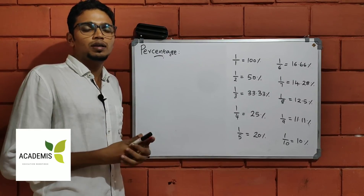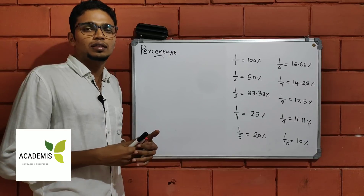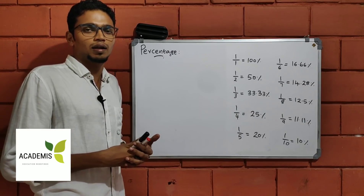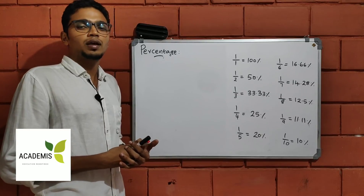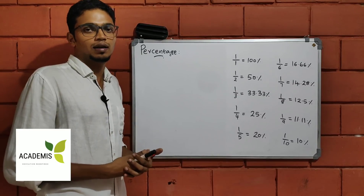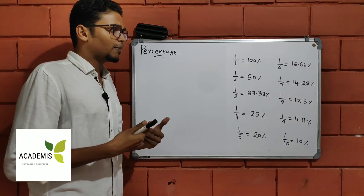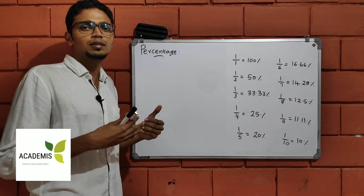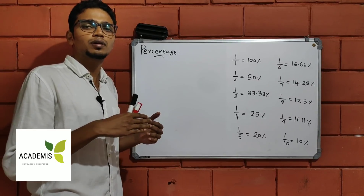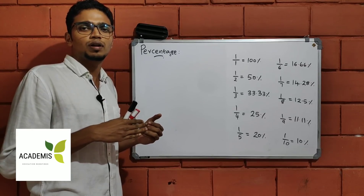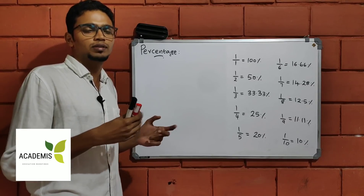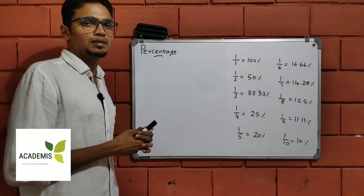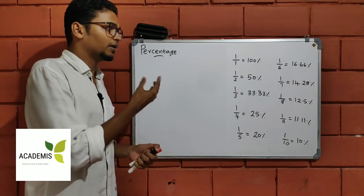We've already done a few videos. If you want to try that, we'll start the first topic in aptitude. The first thing is percentage. Percentage is one of the key characters. We have simple interest, compound interest, and it's easy to do with profit and loss. This is the percentage.